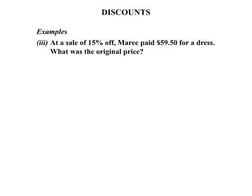Our third and final example of this lesson. At a sale of 15% off, Marie paid $59.50 for a dress. We're asked, what was the original price? Now we don't know the original price. And when we don't know a starting point in these questions, we'll let that be called P in this case. Price, we'll call it P.